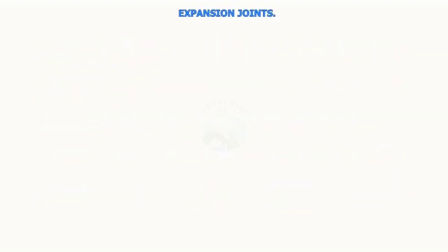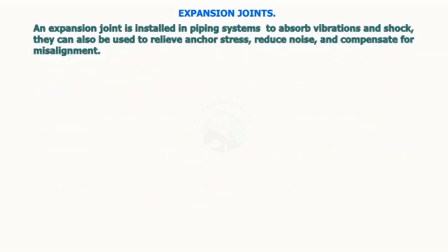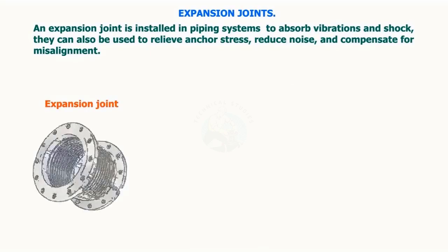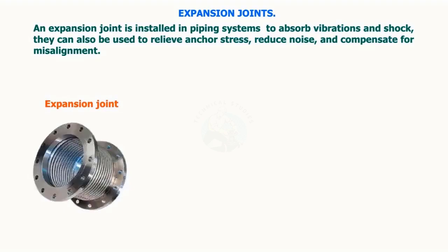An expansion joint is installed in piping systems to absorb vibrations and shock. They can also be used to relieve anchor stress, reduce noise, and compensate for misalignment.